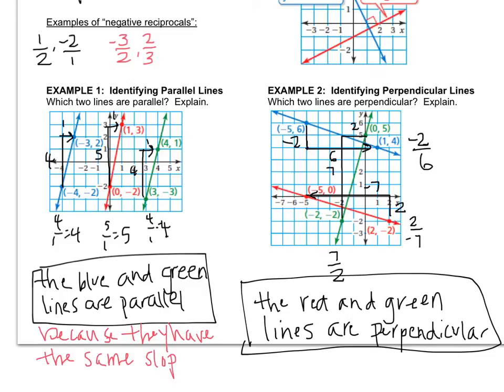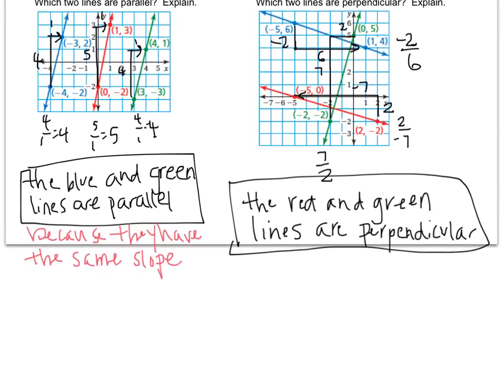And let's do the opposite, or the similar thing, for example two. The red and green lines are perpendicular because their slopes are negative reciprocals.